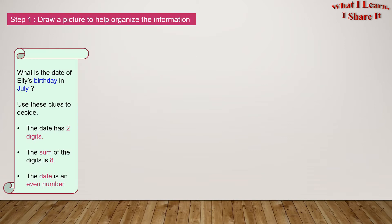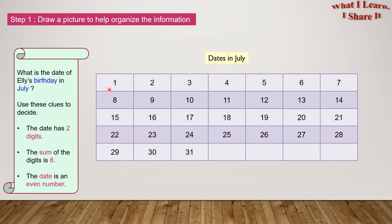Step 1: Draw a picture to help organize the information. So what information do we have? We have the information that Ellie's birthday is in July. So we are going to draw the dates in July. And here it is! The 1st of July to the 31st of July.